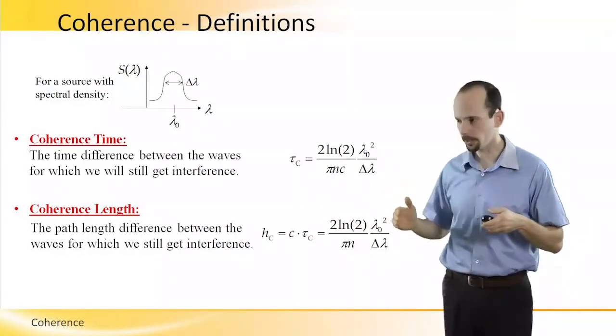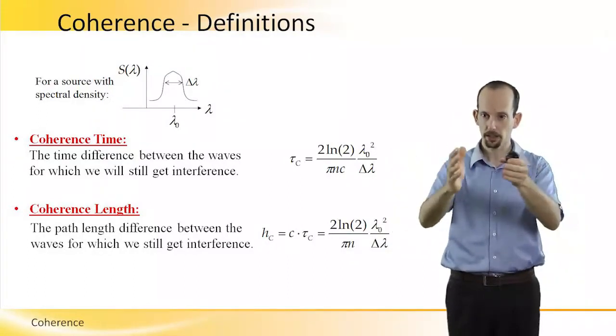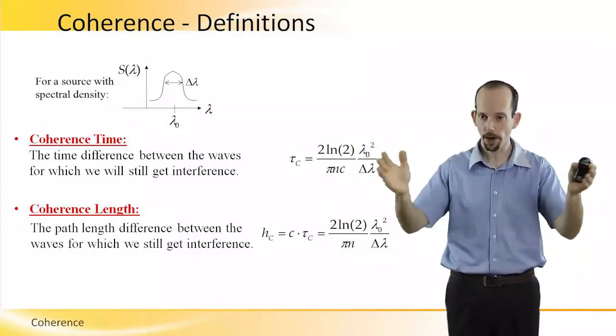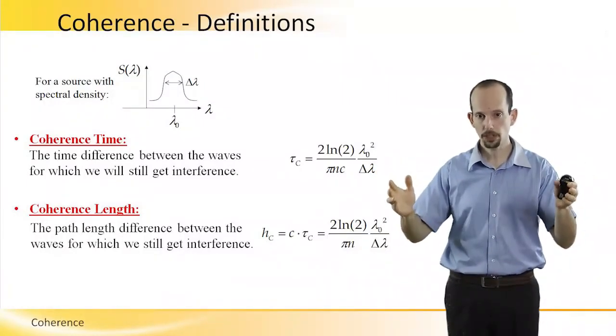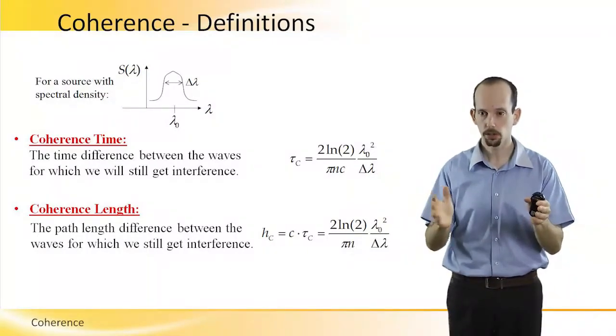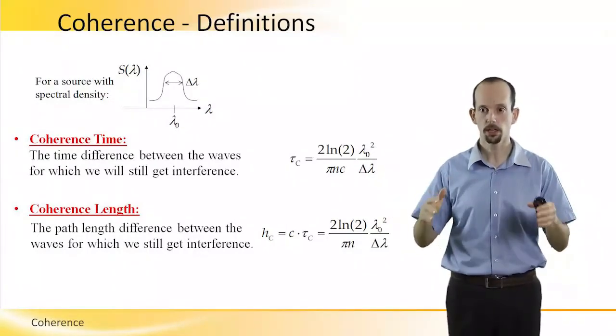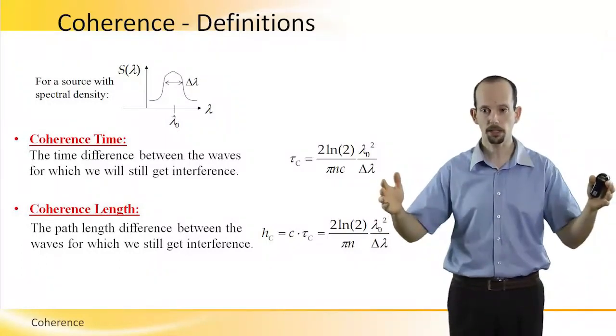Which actually means that for a source which is closer to white light with a wide delta lambda, with a wide spectral bandwidth, we will actually get that the coherence length is shorter. So sources with more wavelengths, which has wider spectral bandwidth.